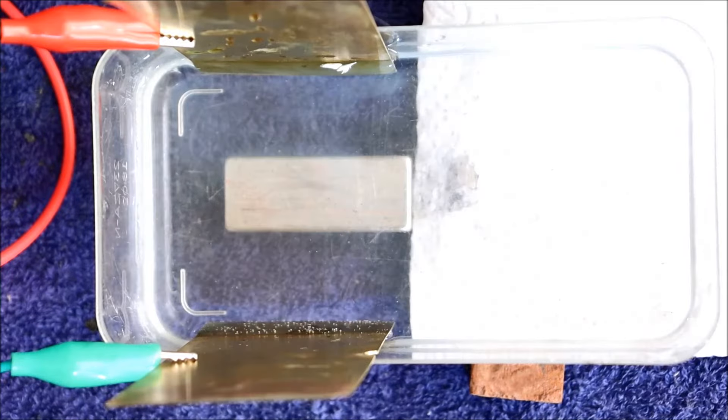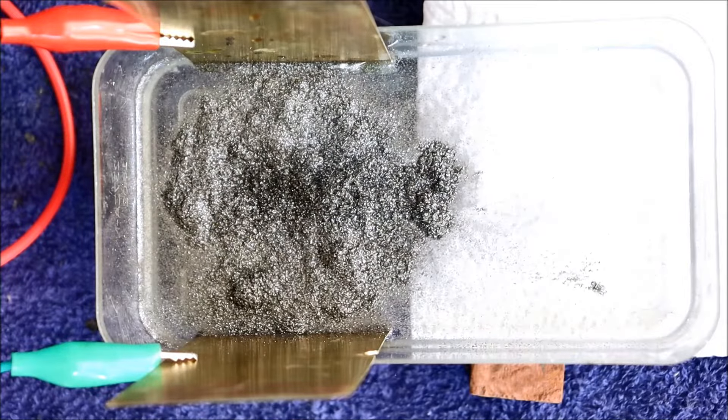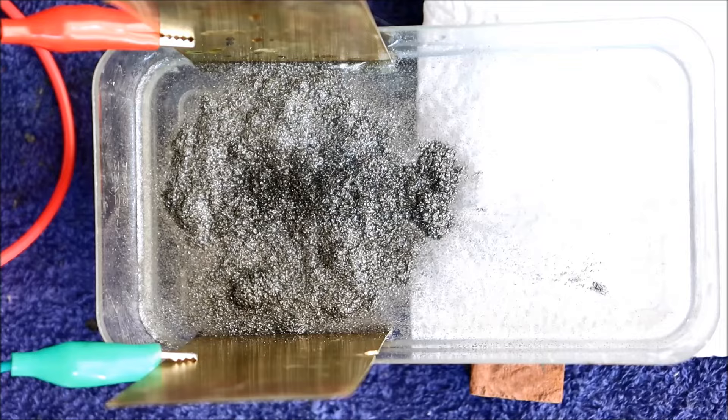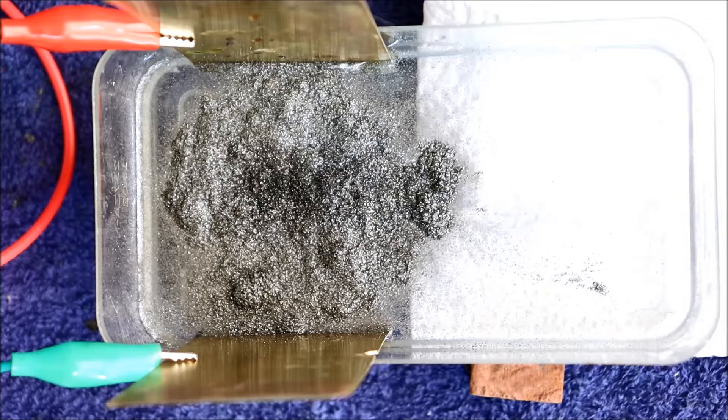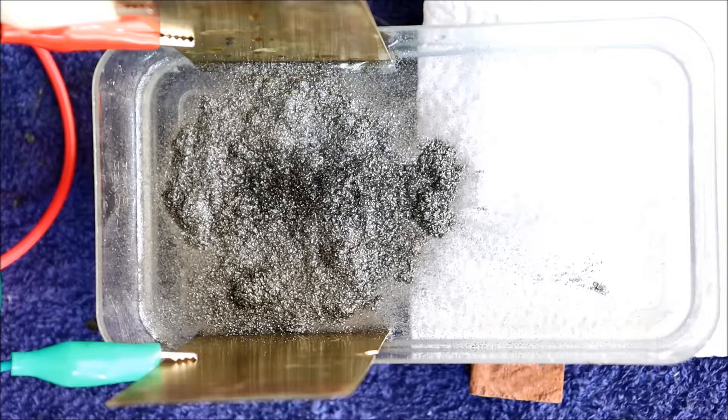Next up I'm going to add about a teaspoon of graphite powder. The water still doesn't have any detergents or other surfactants in it. So most of the graphite as you can see just simply sits on the top of the surface. This does however give a very direct thick layer of graphite for the electricity to go through. Let's see what happens. I can see the resistance changing.